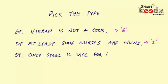Now let's have the next statement: 'Only steel is safe for furniture.' Statements beginning with 'only' or 'alone' are called exclusive propositions or statements. Such statements can be reduced to an A, E, or I kind of statement, but usually while solving a syllogism problem in an exam it is advisable to reduce an exclusive proposition starting with 'only' or 'alone' to an A type, or universal affirmative kind of statement. Therefore we'll take this statement as an A type statement.